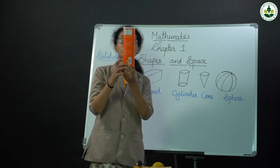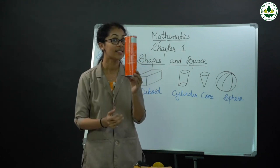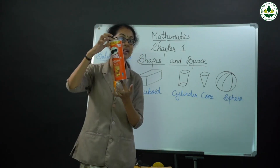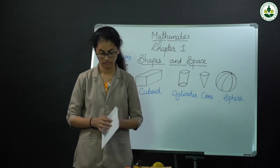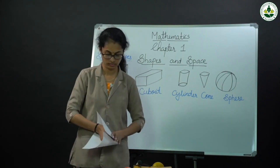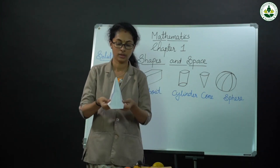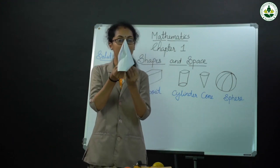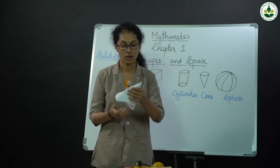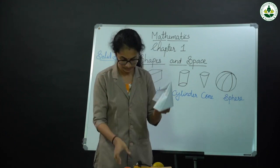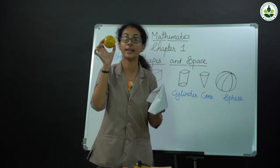What is the shape of this one? Which shape is this one? This one is cylinder. Which shape? This one is cylinder. Which shape is this one? This one is corn. The ice cream corn. This one is corn. Then this shape is spear.